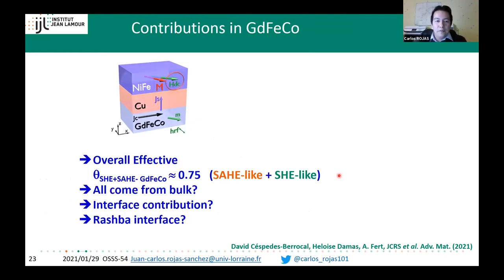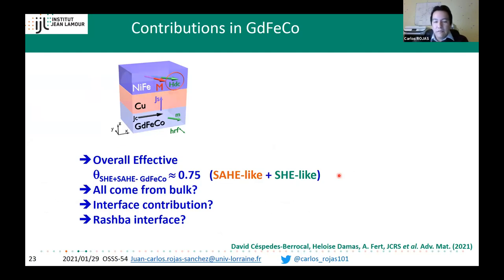To summarize the first GdFeCo study: we get an overall effective efficiency of 0.75. We have both symmetries—the spin-anomalous Hall effect-like and the spin Hall effect-like contributions. An open question is whether all comes from the bulk or if there is an interface contribution from a Rashba interface, since gadolinium has been reported to exhibit a magnetic Rashba interface.